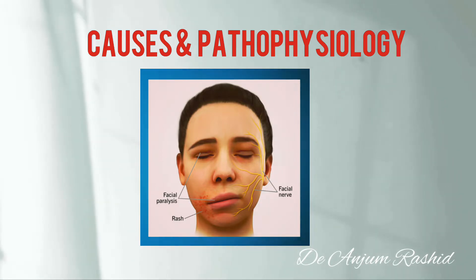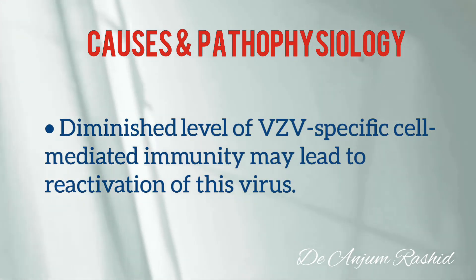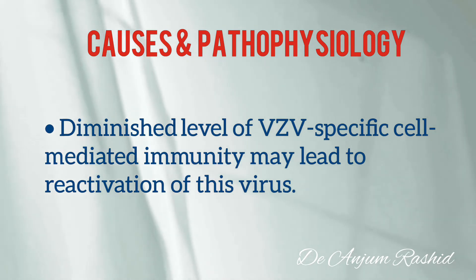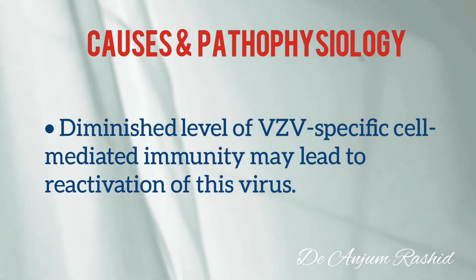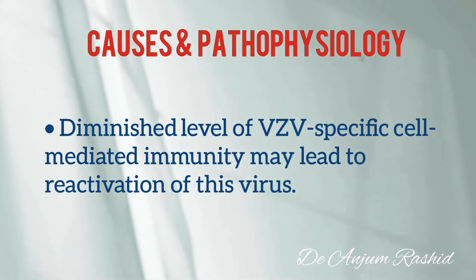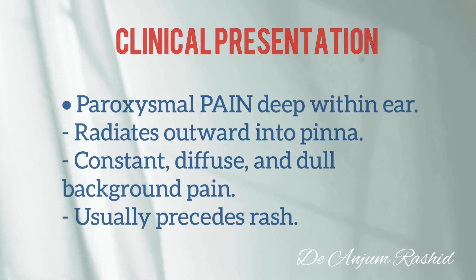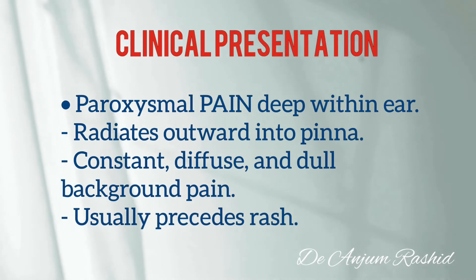Varicella zoster virus infection or reactivation involving the geniculate ganglion of the facial nerve within the temporal bone is the main pathophysiological mechanism of Ramsay Hunt Syndrome. Diminished levels of varicella zoster virus-specific cell-mediated immunity may lead to reactivation of this virus.